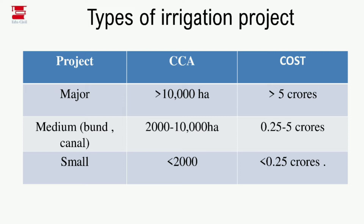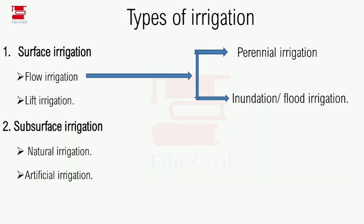For a medium project, the CCA is 2,000 to 10,000 hectares, and the cost is 0.25 to 5 crores. For a small project, the CCA is less than 2,000 hectares — around 1,000 hectares — and the cost is less than 0.25 crores.